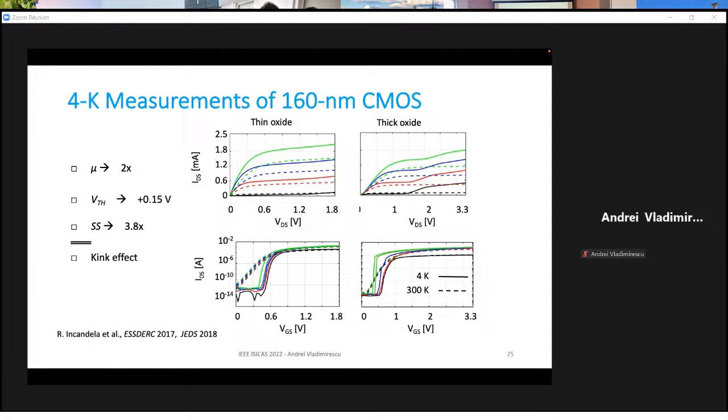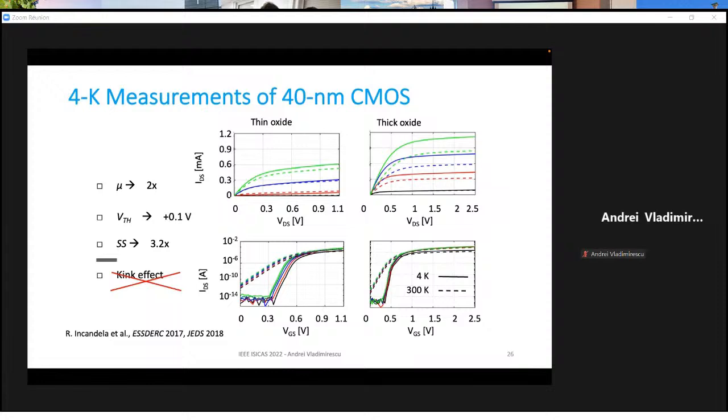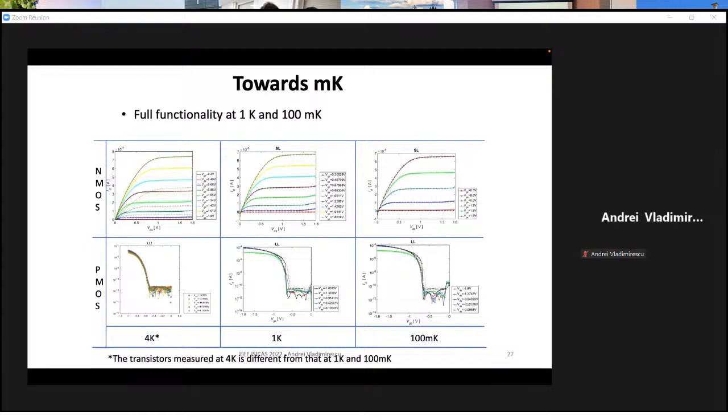In general, what we noticed, you get a higher current because mobility is typically twice as high. The threshold increases a little bit, but it doesn't affect it. And as expected, the sub-threshold slope improves. You say, but why does it improve only by four times when the ratio of temperature, if physics was as simple as the definition of the sub-threshold slope, I should improve by the ratio of temperatures. Well, the problem is that there are other effects coming in that I will mention in a minute. I just wanted to show you that in 40 nanometers CMOS, this kink effect does not show up. So this was the first technology of choice for us to build a demonstrator of all the control electronics.